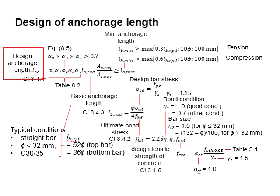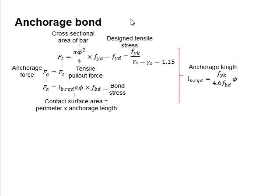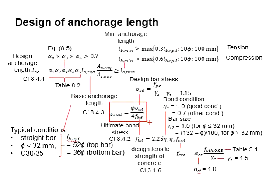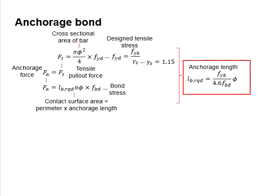The design anchorage length must be greater than the minimum anchorage length. The basic anchorage length is obtained from an equation that expresses it in terms of the design bar stress, which is the characteristic yield strength of the steel divided by the partial factor of safety. The partial factor of safety for steel is 1.15. These derivations were discussed in the previous video.